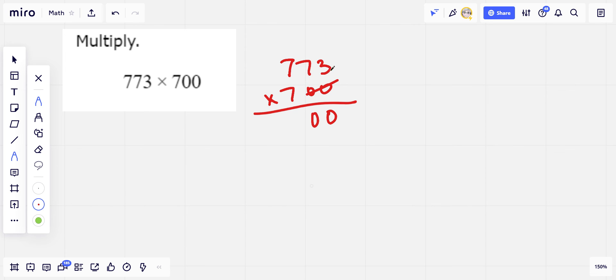So now we have 7 times 3. That is 21. So we'll put down the 1 and we'll carry the 2.